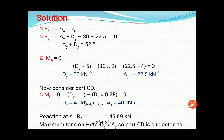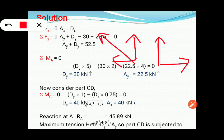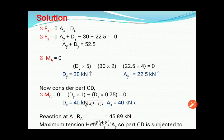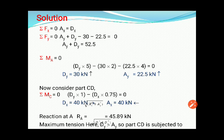To find the resultant reaction R_A: R_A = √(A_x² + A_y²). Similarly, you can calculate R for the other support. This completes the first numerical on cable analysis.